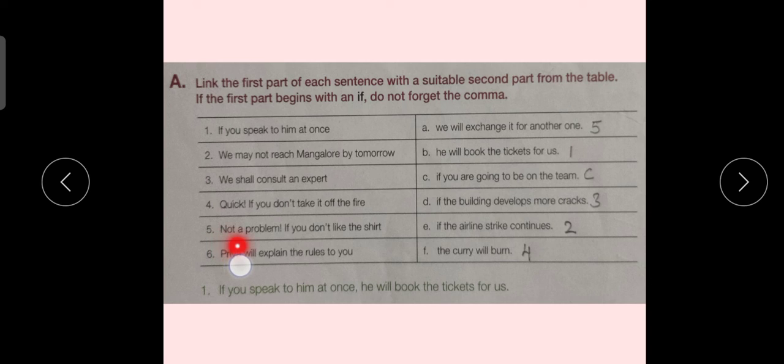Sentence number 5. Not a problem if you don't like the shirt. We will match this sentence with option A in second section. We will exchange it for another one. Sentence number 6. Priya will explain the rules to you. We will match this part with option C. If you are going to be on the team.